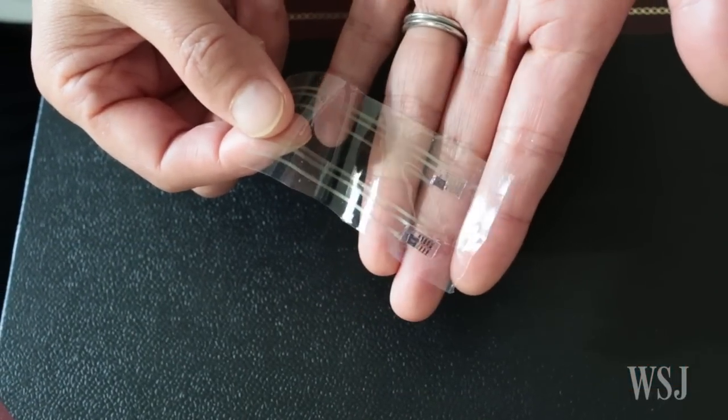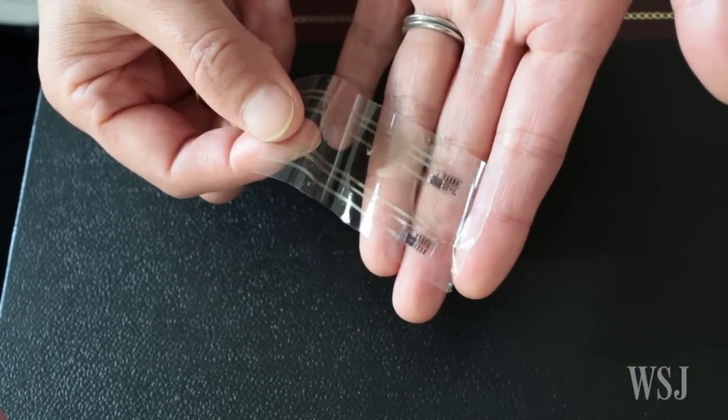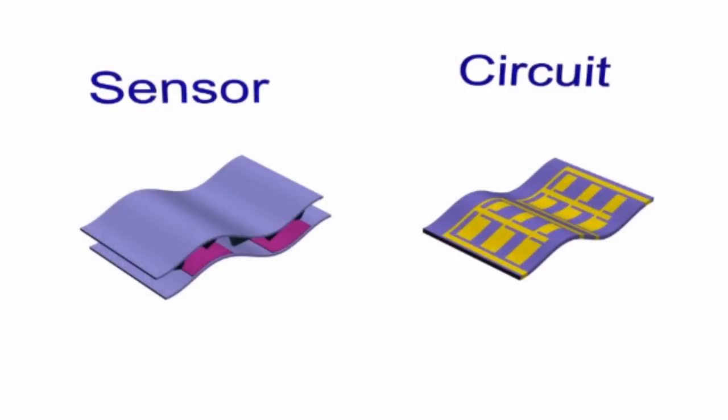The artificial skin is made of plastic and consists of two layers. The top layer has a sensing mechanism and the bottom layer is designed to send electronic signals to the brain.